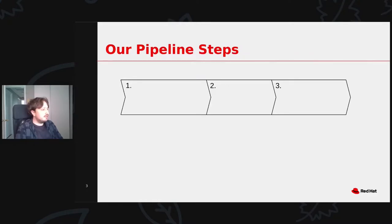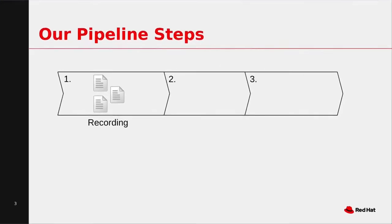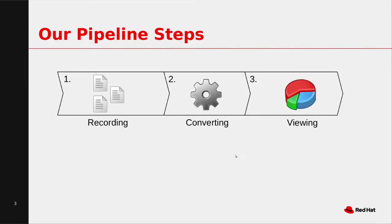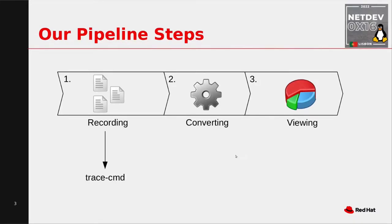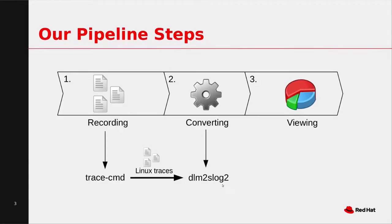The pipeline has three steps. First, we record Linux traces using TraceCMD, which produces several Linux trace files. Then we use the DLM-to-Slot2 tool to convert those traces to Slot2 format. Finally, we view them graphically using a viewer called Jumpshot, which can open Slot2 trace files.